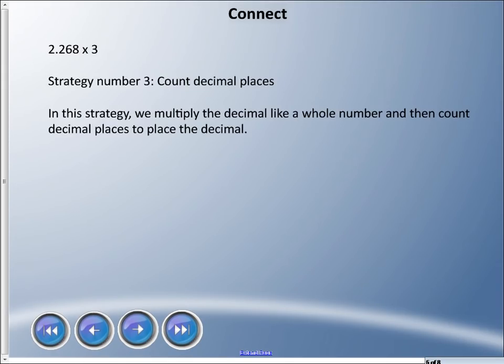Strategy number 3, we count decimal places. In this strategy, very similar to the previous one, but we are going to count decimal places. We don't need to estimate in this one. If you were to ask me, I'd recommend strategy number 2 or strategy number 3. Let's do it again, maybe the old-fashioned way. 8 times 3 is 24, 6 times 3 is 18 plus 2 is 20, 2 times 3 is 6 plus 2 is 8, and 6 times 3. There is our answer again, 6804. Now I asked us to count the number of decimal places. I have 1, 2, 3. Because I have three decimal places, in my answer I will definitely have three decimal places. That's where we're going to put our decimal.